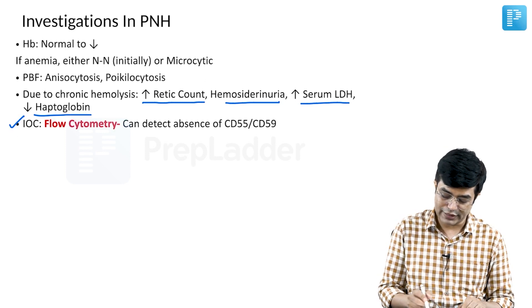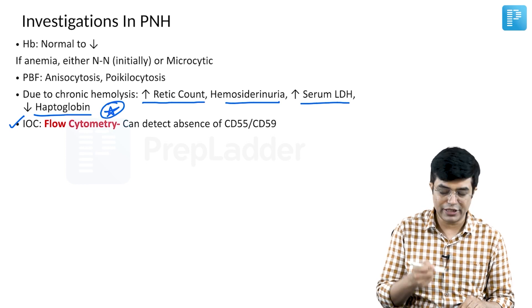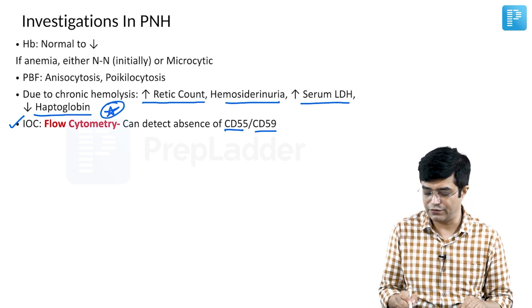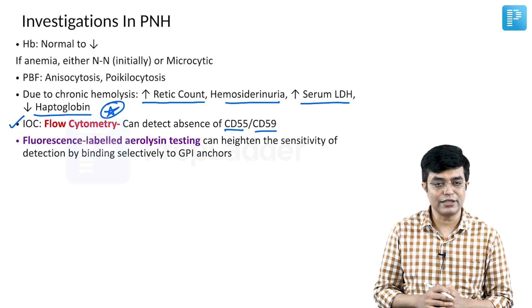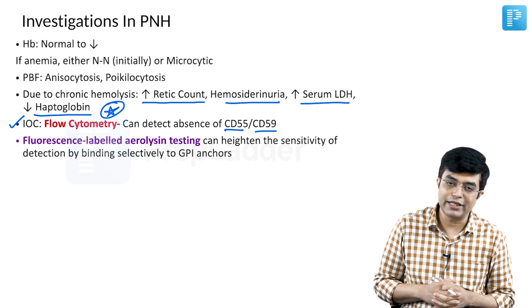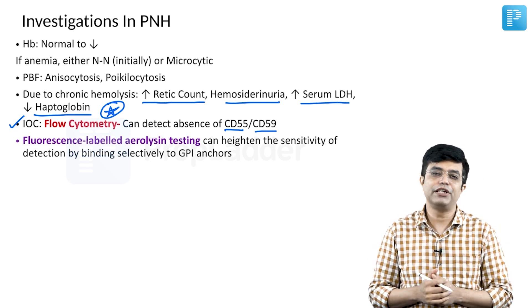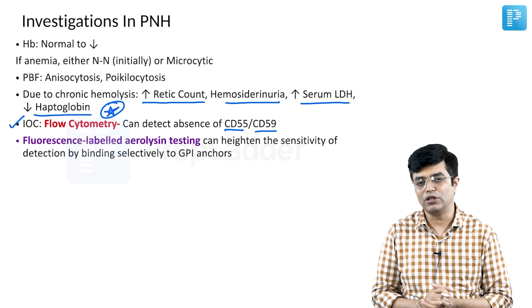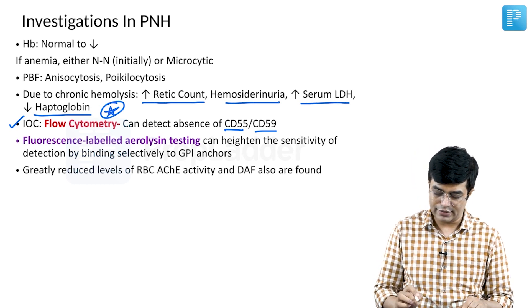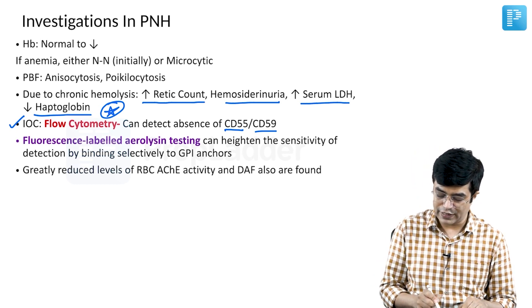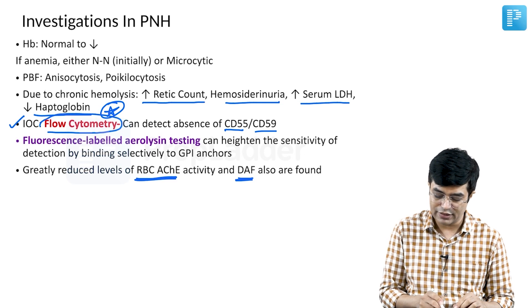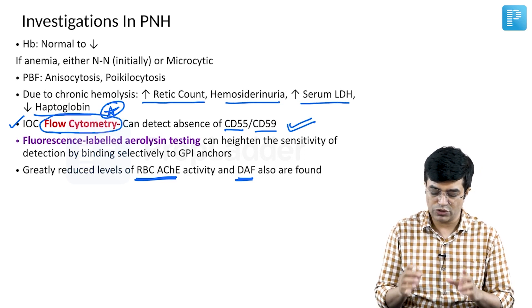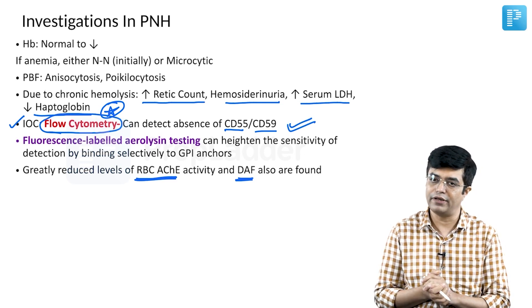The investigation of choice is flow cytometry — this is an already asked MCQ. It can detect the absence of CD55 and CD59. Fluorescence-labeled aerolysin (FLAER) testing has been introduced, which can further increase the sensitivity of these tests because it can bind selectively to the GPI anchors. In all these patients, you will also find reduced levels of acetylcholinesterase activity in the RBCs. However, flow cytometry to detect the absence of these markers is the most important diagnostic investigation.